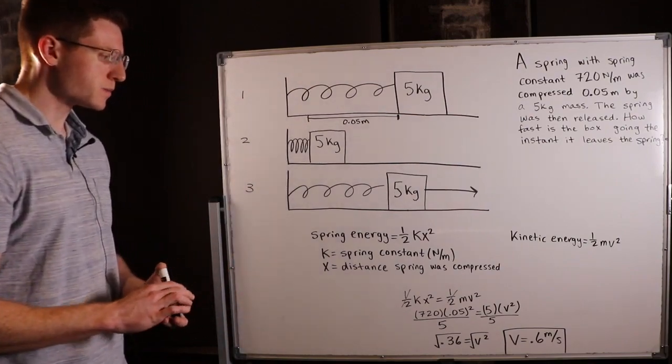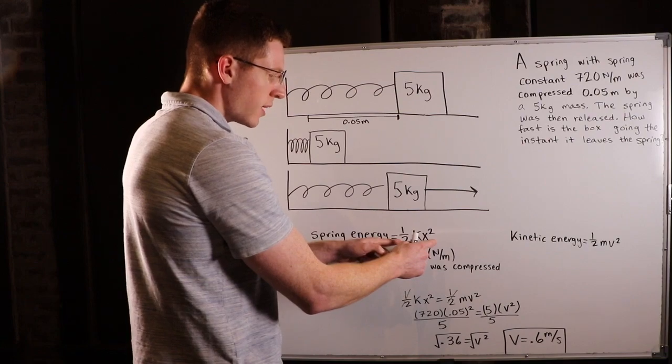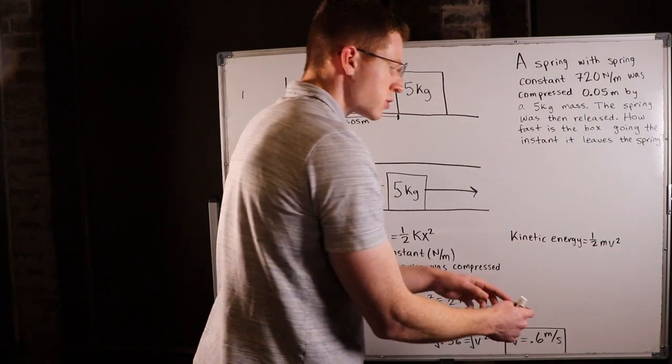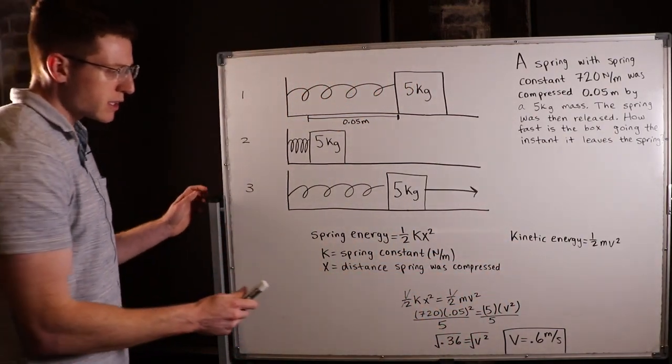So if we simply conclude that one half kx squared, that energy must have all turned into one half mv squared, this energy, then we can solve the problem very easily. So all I did was I set one half kx squared equal to one half mv squared.